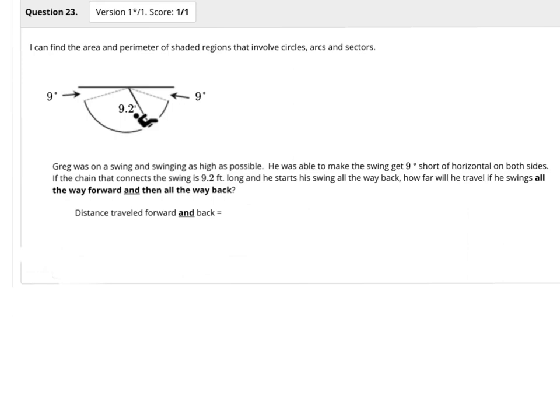In order to do this question, you need to know the circumference formula for a circle. Circumference equals pi times diameter, or you can use the formula circumference equals 2 pi r, because 2 radii equal 1 diameter.